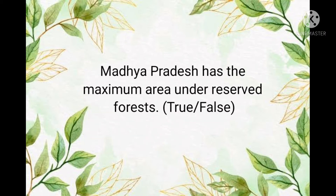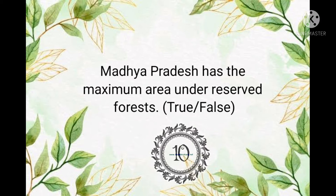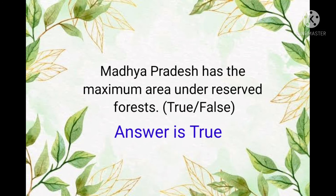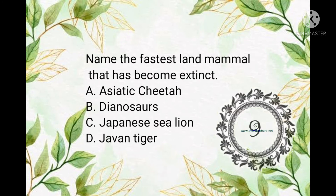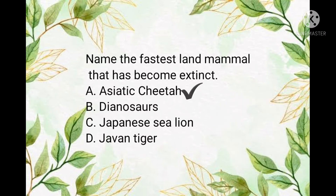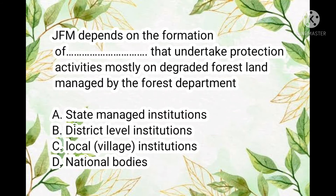Question number thirteen: Madhya Pradesh has the maximum area under reserved forests — true or false? The answer is true. Question number fourteen: name the fastest land mammal that has become extinct. The answer is the Asiatic cheetah.